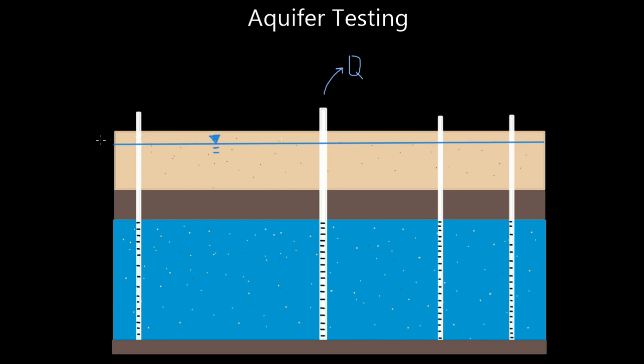So at T0, before we start our test, our potentiometric surface is static. We haven't made any drawdown. We haven't drawn down the potentiometric surface at all. Let's say one minute into our test, we draw down to here. So that's our first time step. We'll call it T1. And let's say at T1, we've drawn down our well or the potentiometric surface five feet.